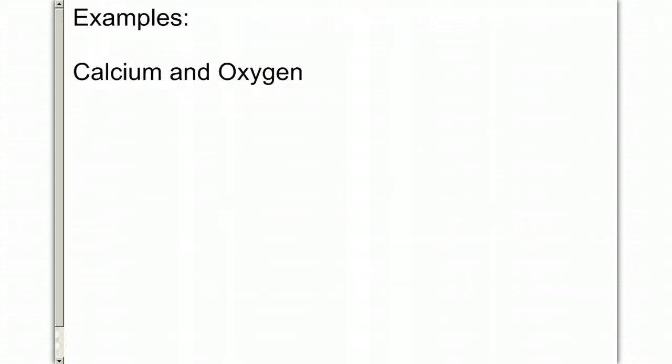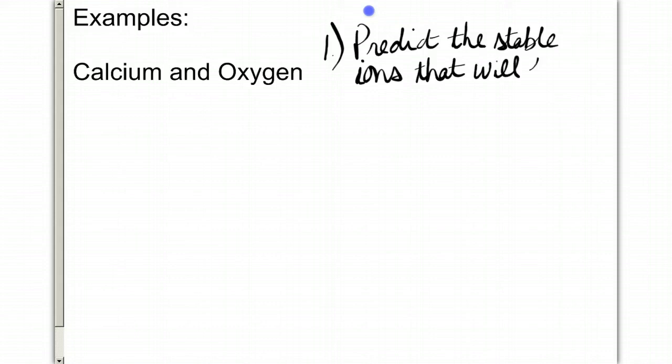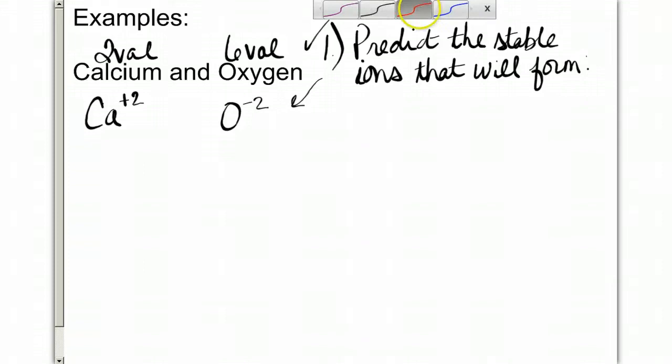My first example is going to be calcium and oxygen. The first thing that I want to do is predict the stable ions that will form. We'll recall that calcium has 2 valence, which is going to cause it to form a Ca plus 2 ion. Oxygen has 6 valence, which is going to cause it to form an O minus 2 ion. That would be number 1. Complete. Finish the number 1. Predict the stable ions that would form Ca plus 2 and O minus 2.